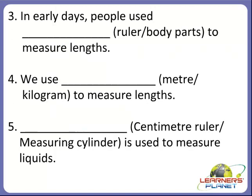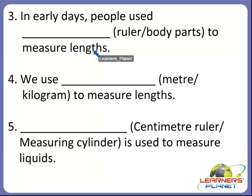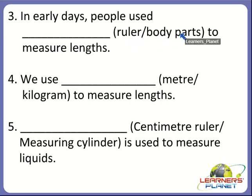Now the next one. In early days, people used dash to measure length. What will be the answer? Is it ruler or body parts? Yes, people used body parts — like handspan, cubit, stride. We studied this in the lesson. They used their body parts to measure length.